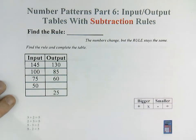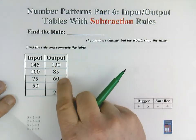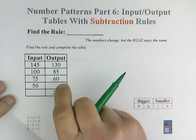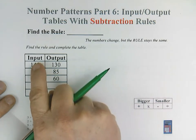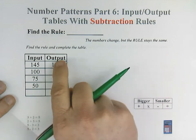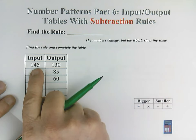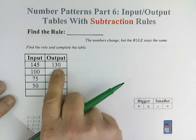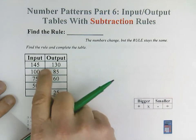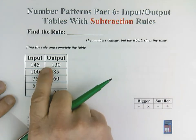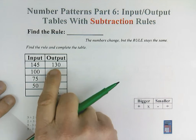An input-output table is a table of numbers that have two columns. It has an input column here on the left side and an output column here on the right. The input number is the number that we start with. The output number is the number that it turns into. So 145, something happens and it turns into 130.